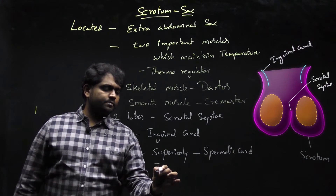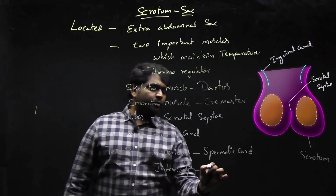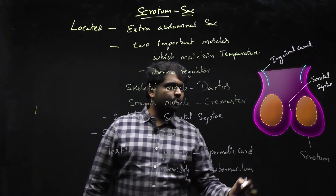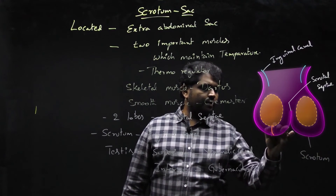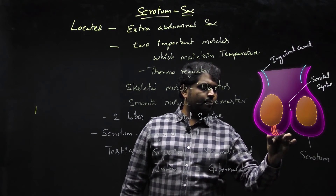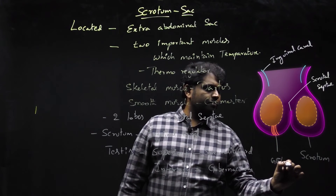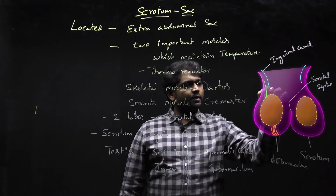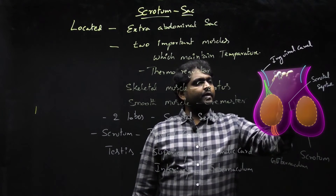Inferiorly, the testes are hanged by the help of the gubernaculum. So the inferior area is hanged by a band called the gubernaculum, while superiorly the testes are hanged by the spermatic cord.